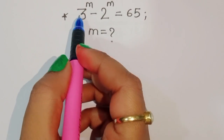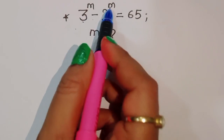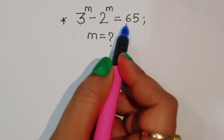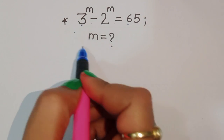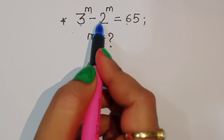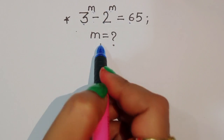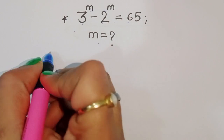The question is given: 3 power m minus 2 power m is equal to 65. We have to find out the value of m. What is the value of m here?